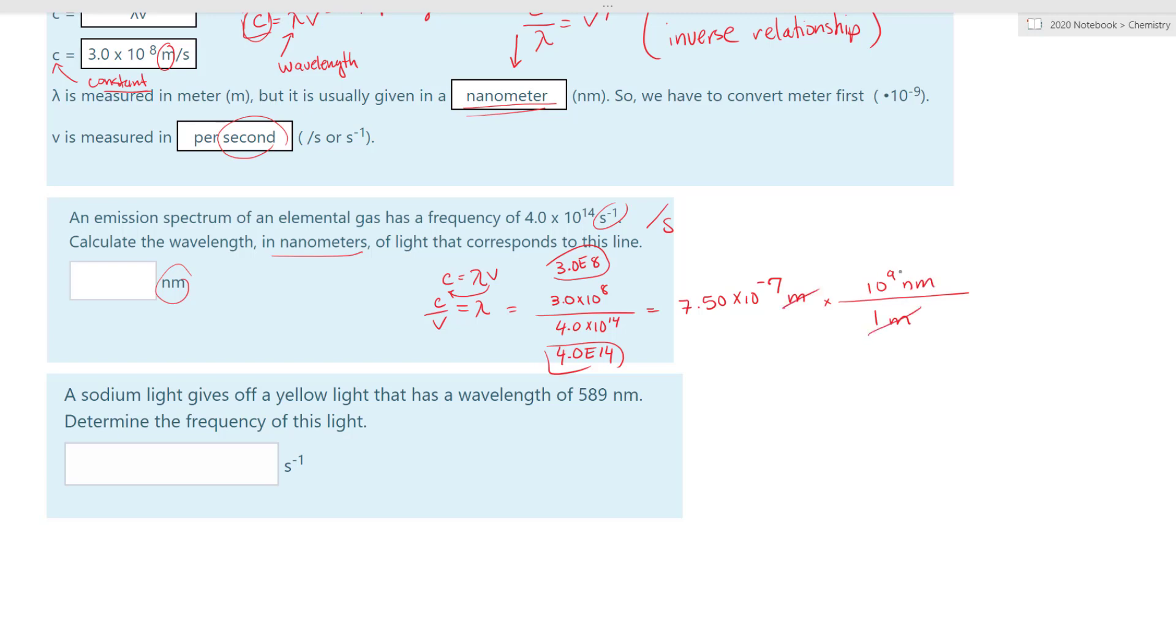Now we can cross it out. So again, this is multiplication, so we just add them together. If you're doing this on multiple choice, you can just add the exponent together. So in this case, 7.50 times 10 to the negative 7 plus 9. What's that going to give you? 2. So this is to the second power nanometers. So our answer could be 7.50e to the second or 750 to be exact. So either one will be fine. So 750 nanometers.